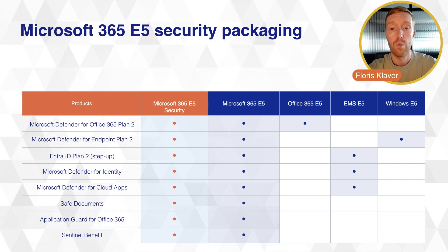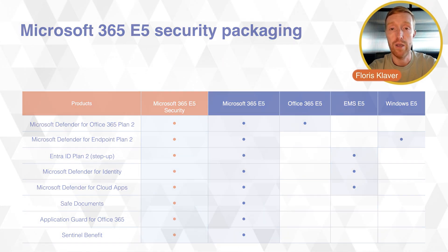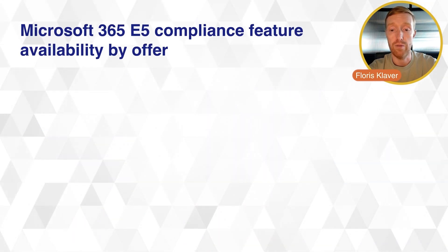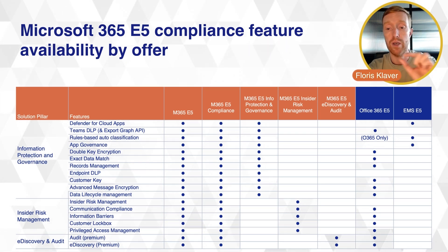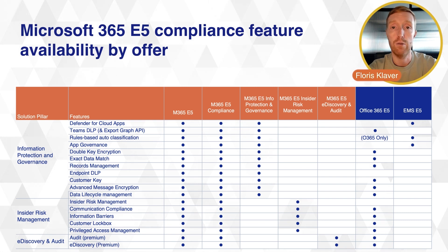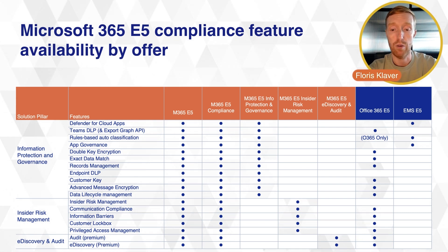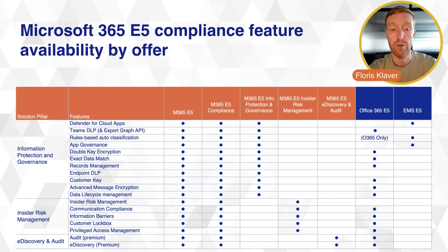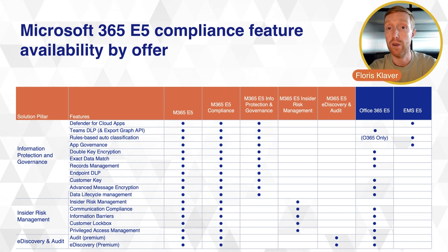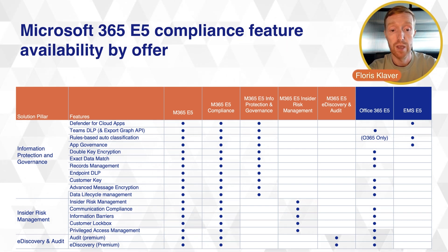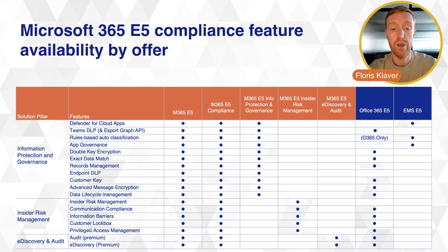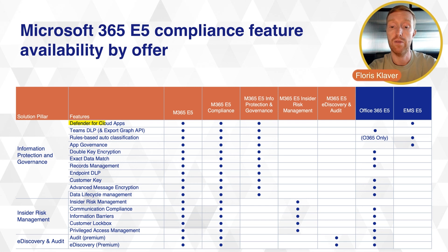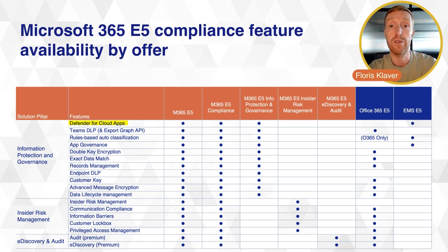You can also see here how this compares to the different Office 365, EMS, and Windows E5 suites. These products are also included in their own building blocks. Defender for Office 365 is part of Office 365 E5, Defender for Endpoint Plan 2 is part of Windows E5, and Entra ID Plan 2, Defender for Identity, and Defender for Cloud Apps are part of EMS E5.